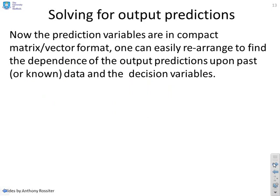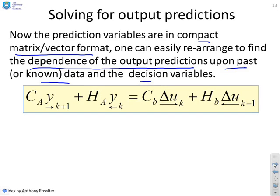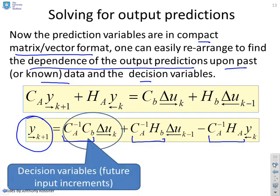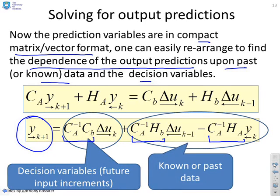Finally, I want to solve for the output predictions. Now that we've got all the predictions in a compact matrix vector format, we can easily rearrange this to find the dependence of the output predictions upon the past or known data and the decision variables. There's the equation we've got. We can easily multiply through by CA inverse, which is what I've done here. Here's my output predictions on their own. They have some dependence on the future input increments, some dependence on the past input increments, and some dependence on the past outputs. It's very, very clean. We can see how the future variables, the things we want to choose, affect our predictions, and how the past affects our predictions.